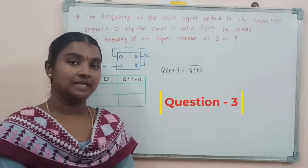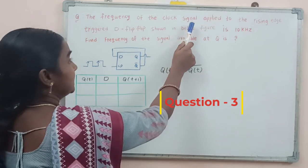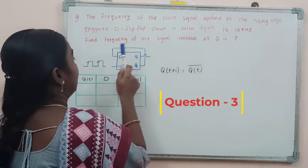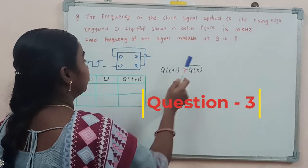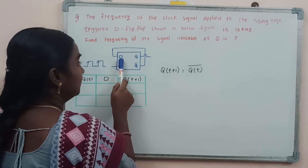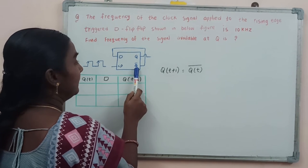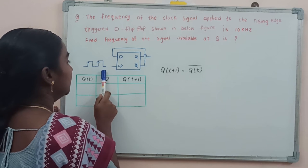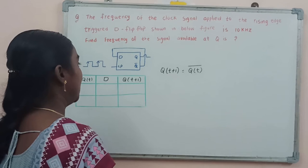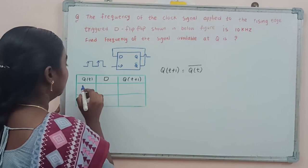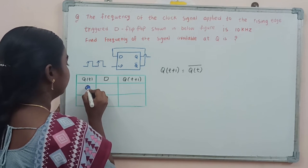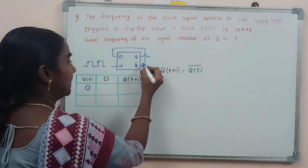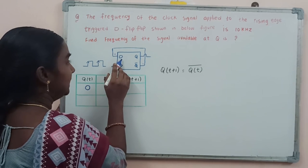Now one more question: the frequency of the clock signal applied to a rising-edge-triggered D flip-flop shown in the figure is 10 kHz. Find the frequency of the signal at Q. In this circuit, the input to the D flip-flop is taken from Q-complement of the same flip-flop, and positive-edge-triggered clock pulses are applied. Before the clock pulse, if Q(t) equals 0, then Q-complement equals 1, so D input is 1.